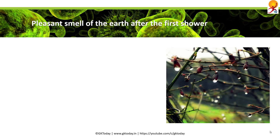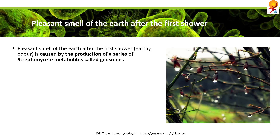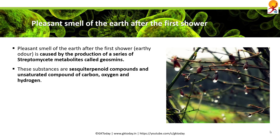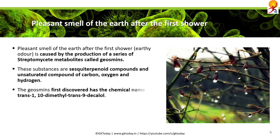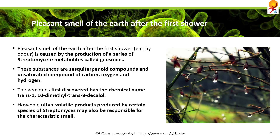What helps the earth smell so pleasant after the first shower? The pleasant smell of earth after the first rain shower is caused by the production of a series of Streptomyces metabolites called geosmin. These substances are sesquiterpenoid compounds — unsaturated compounds of carbon, oxygen, and hydrogen. The geosmin first discovered had the chemical name trans-1,10-dimethyl-trans-9-decalol. However, other volatile products produced by certain species of Streptomyces may also be responsible for this smell.